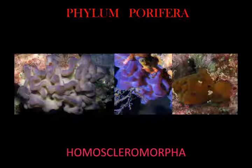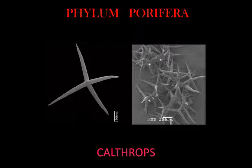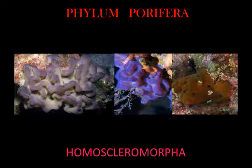Homoscleromorpha comprises a small group of marine Porifera with unique features: flagellated pinacocytes and a basement membrane lining both choanoderm and pinacoderm, and oval to spherical choanocyte chambers with large choanocytes. The skeleton, if present, is composed of tetraxonic siliceous spicules with four equal rays and derivatives showing reduced or proliferated rays. There is no differentiation between megascleres and microscleres, and the spicules are usually small — 100 micrometers or less — and not localized in any particular region. Most species are encrusting or cushion-shaped.